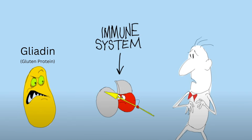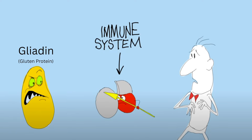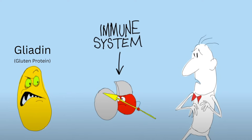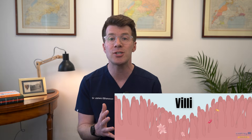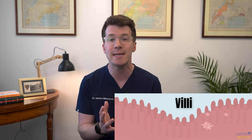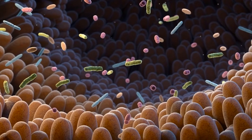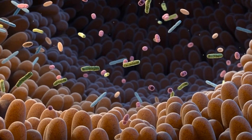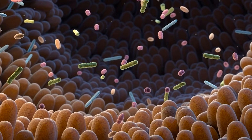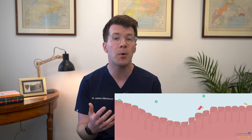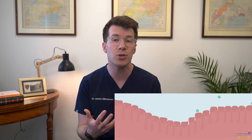When someone with celiac disease eats gluten, their immune system mistakenly identifies part of the gluten protein called gliadin as a threat and attacks it. In doing so, it damages the lining of the small intestine, particularly the villi, which are small finger-like projections in the gut that help to absorb nutrients. This damage leads to malabsorption, meaning that the body struggles to take in essential nutrients from food.